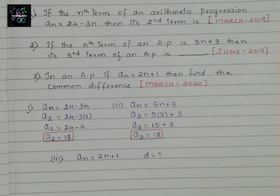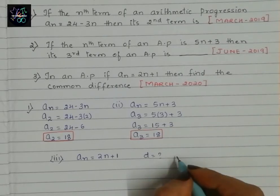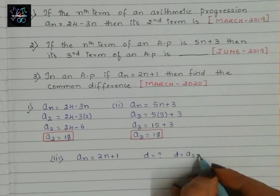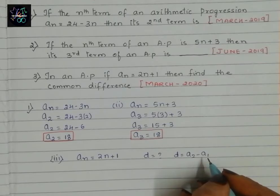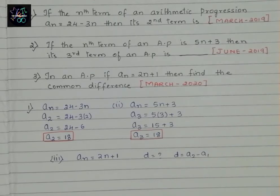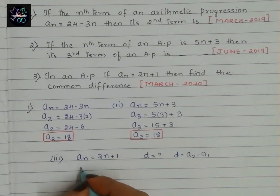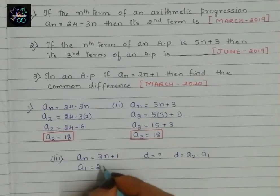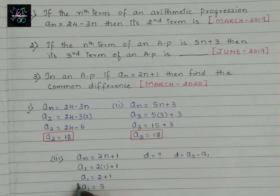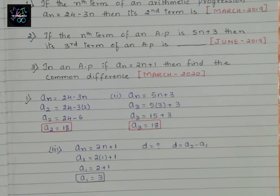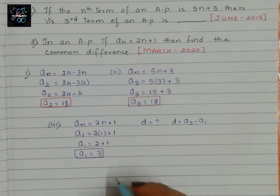We know that d equals the second term minus the first term, or the third term minus the second term. Let us first find a1: a1 equals 2 times 1 plus 1, which gives us 2 plus 1, so a1 equals 3. Next we will find a2.